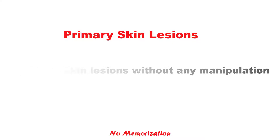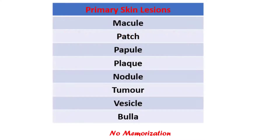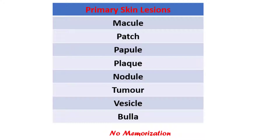So what are these lesions? These are macule, patch, papule, plaque, nodule, tumor, vesicle, and bulla.